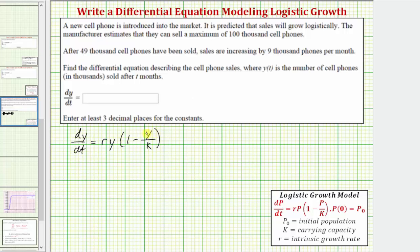In this differential equation, y is the number of thousands of cell phones sold, k is the carrying capacity, which in our case is the maximum number of cell phones that will be sold, and r is the intrinsic growth rate, which is the growth rate minus any constraints.